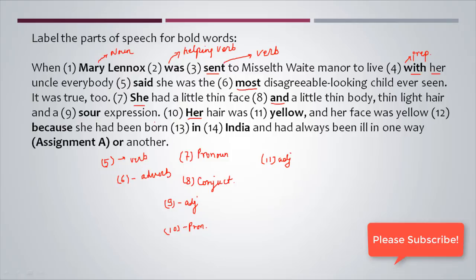'Her hair was yellow' — 'yellow' is telling the quality of hair, so it is an adjective. 'Her face was yellow because she had been born' — 'because' is linking the first clause and the second clause, so it acts as a conjunction. 'Born in India' — 'in' is a preposition because it shows the link between the noun 'India' and the word 'born', and it precedes the noun. The assignment question is: 'had always been ill in one way or another' — tell me in the comment section what part of speech the bold word represents.